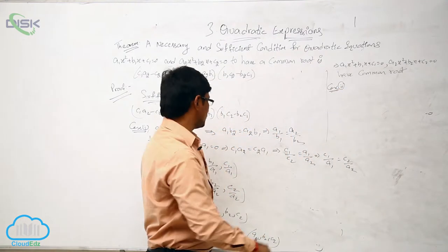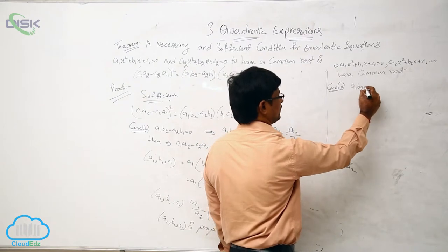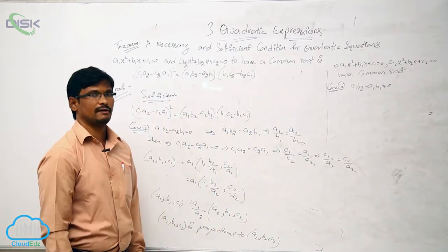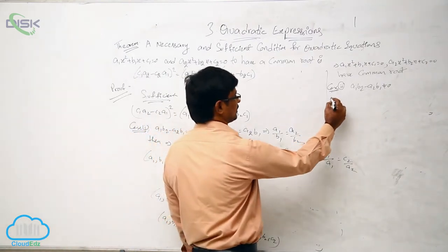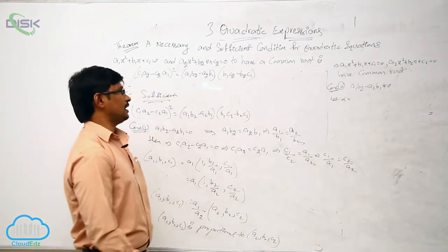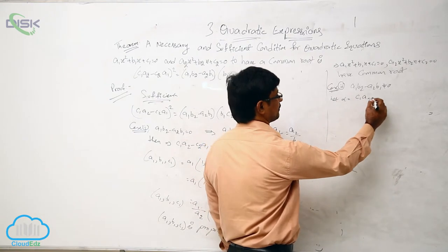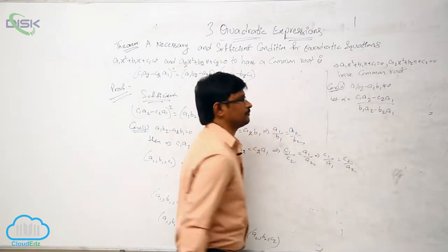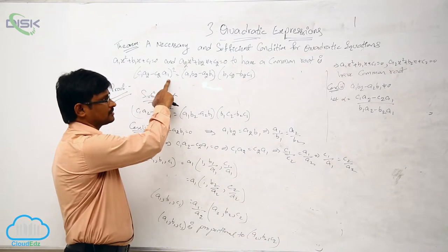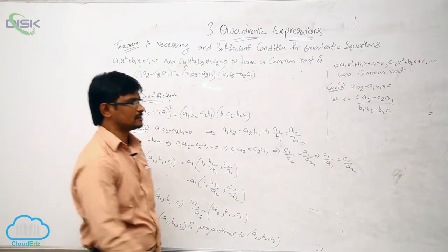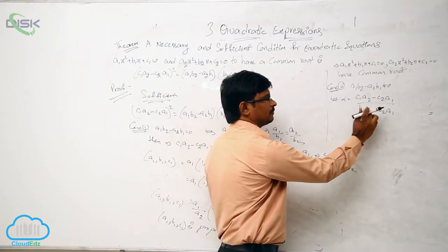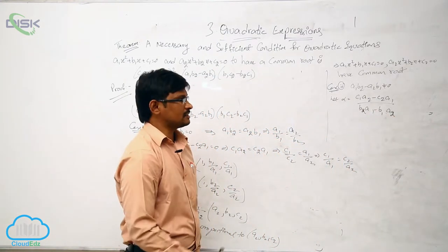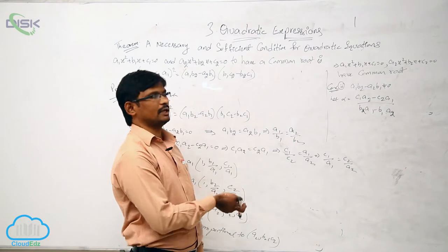Case 2: Considering a1·b2 - a2·b1 ≠ 0. Now, let alpha be defined as: alpha = (c1·a2 - c2·a1) / (a1·b2 - a2·b1). We have to prove that this alpha value is a root of the quadratic equation.